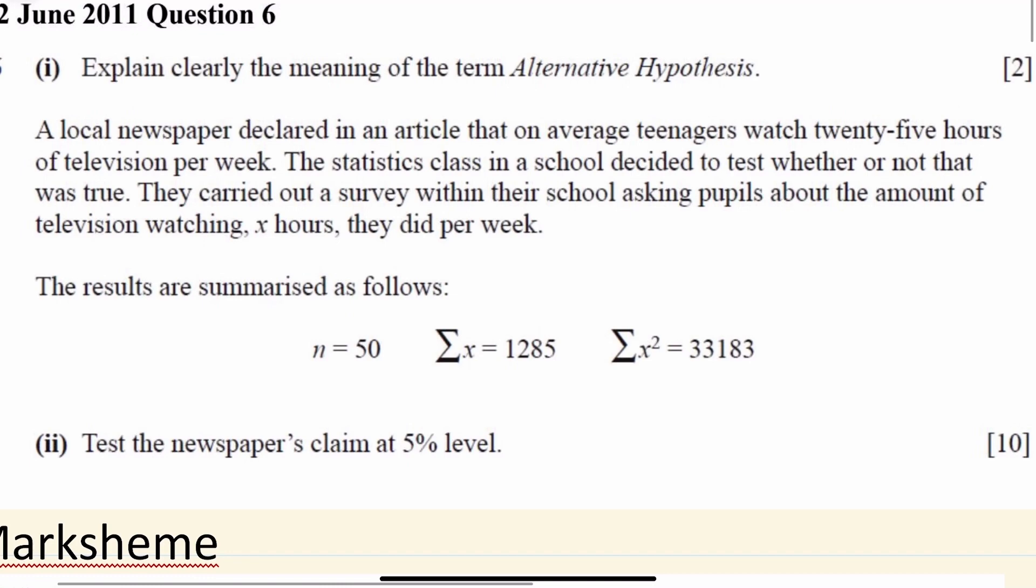Part two says a local newspaper declared in an article that on average teenagers watch 25 hours of television per week. The statistics class in a school decided to test whether or not that was true. They carried out a survey within their school asking pupils about the amount of television watching. The results are summarized as follows: n = 50, sigma x = 1,285, and sigma x squared = 33,183. Test the claim at a 5% level.